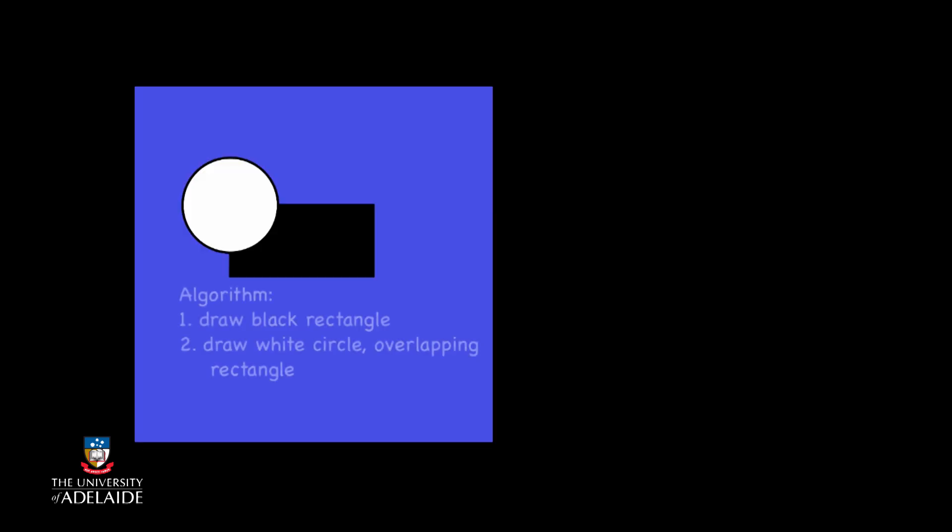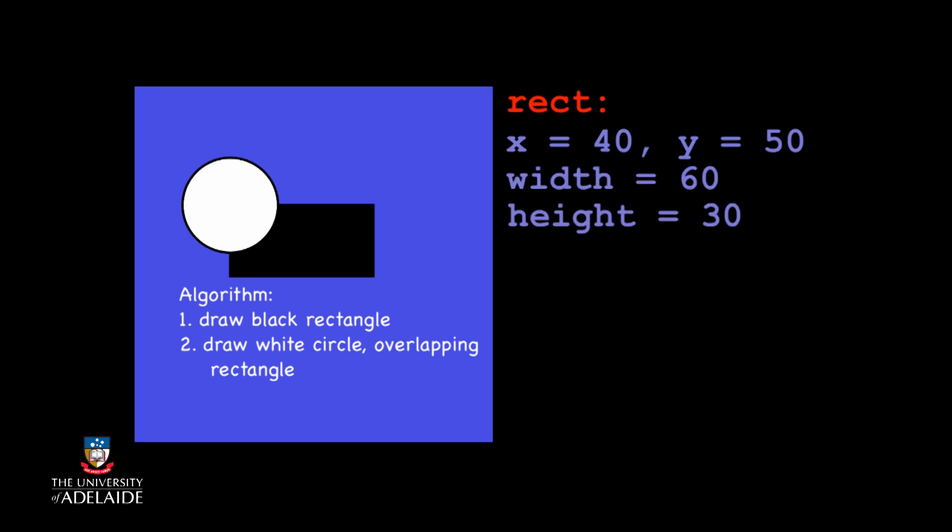Let's get back to our initial plan. We wanted to draw a black rectangle overlapped by a white circle. We'll use the same parameters as before in our first overlap exercise, x equals to 40 and y equals to 50, and the same width and height for the rectangle, and x equals to 40 and y equals to 50, and a width of 40 for the ellipse function.